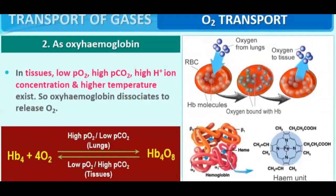In tissues, low partial pressure of O2, high partial pressure of CO2, high H+ concentration, and higher temperature are present, so that oxyhemoglobin dissociates and releases oxygen. For oxyhemoglobin formation, all conditions must be low; to convert oxyhemoglobin back to normal hemoglobin, all conditions must be the opposite.